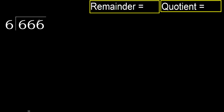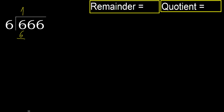666 divided by 6. 6 is not less, therefore work with 6. 6 multiplied by which number is nearest to 6 but not greater? 6 multiplied by 2 is 12 — that is greater. 6 multiplied by 1 is 6, which is not greater. Ok.